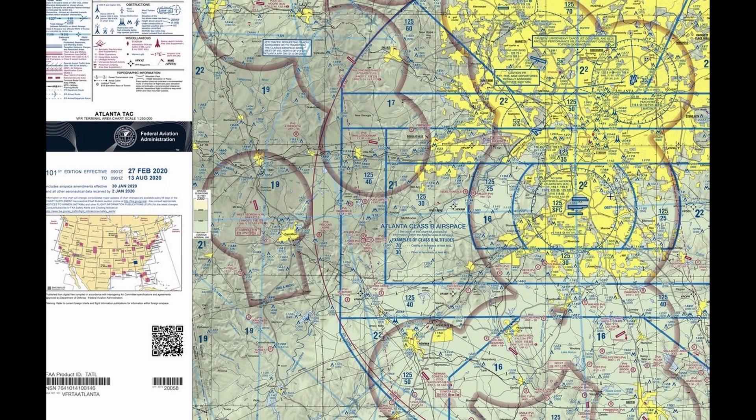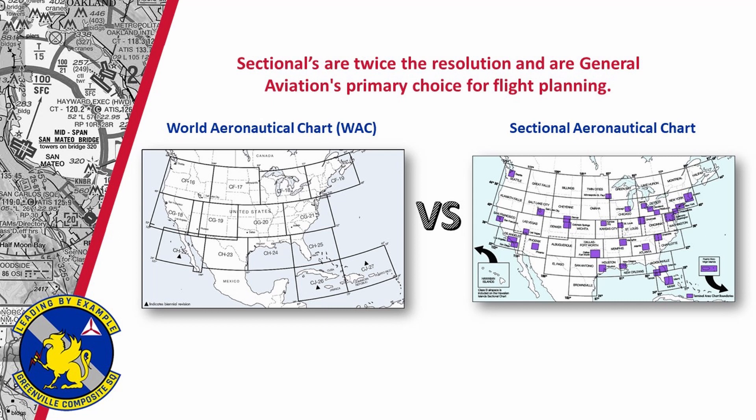Let's talk briefly about terminal area charts. These charts are twice the resolution of the sectional charts, at a scale of one to 250,000, or about one inch for every three and a half to nine nautical miles, give or take. These help you get more information in congested areas like New York City or Los Angeles, where there's just too much information in a small area — it would be too much clutter. Terminal area charts are only created where there is major aviation traffic. As you can see, world aeronautical charts cover a much larger area than the sectionals, which is why they are useful for general planning but not as useful for more detailed planning.